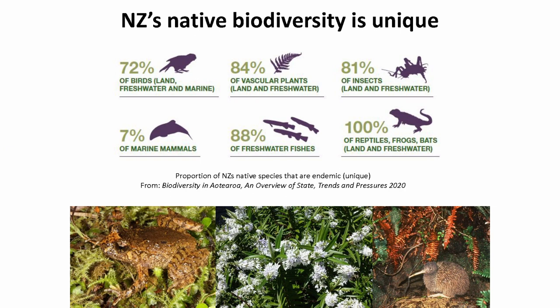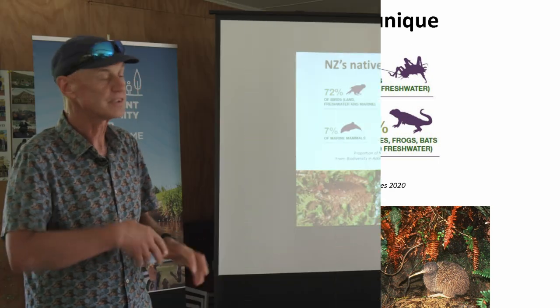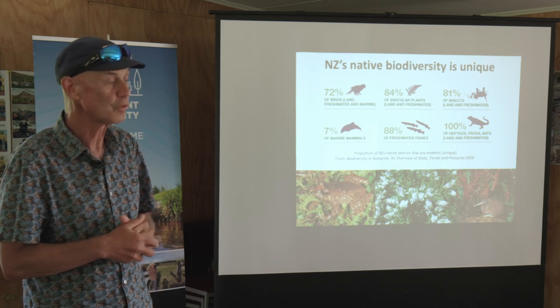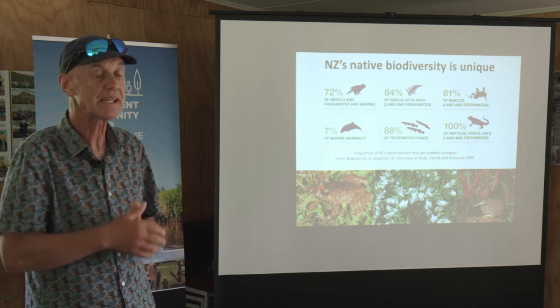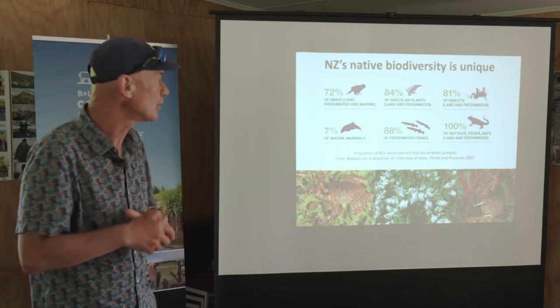My next point is that many of our species — most of our species, in fact — only occur in New Zealand. We use the word endemic to describe that; it means they only occur here. And some of them are endemic to particular areas of New Zealand. So you go into Fiordland, and there are endemic species in Fiordland. There are endemic species on the Central Otago mountain ranges, and endemic species in Northwest Nelson, Kahurangi National Park. They only occur in those areas.